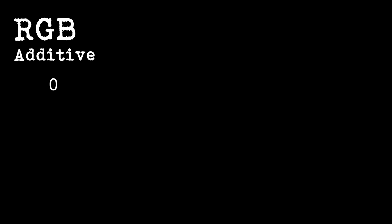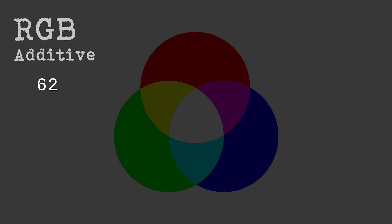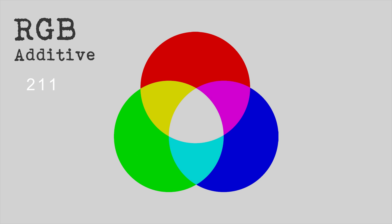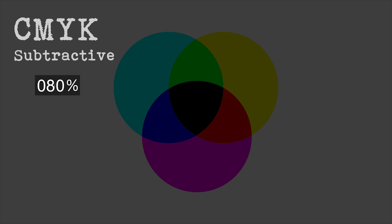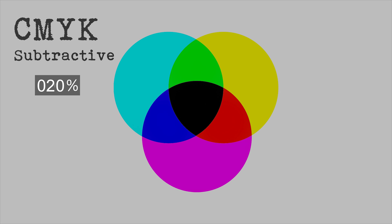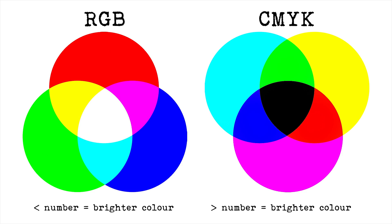RGB is additive because you start with zero which is black and go to 255 to get white, so you add a numerical figure to go through the colors from black to white. With CMYK it's subtractive — black is at 100% or the highest number and you subtract numbers to move toward white. So with RGB higher numbers equal brighter colors, and with CMYK lower numbers equal brighter colors.